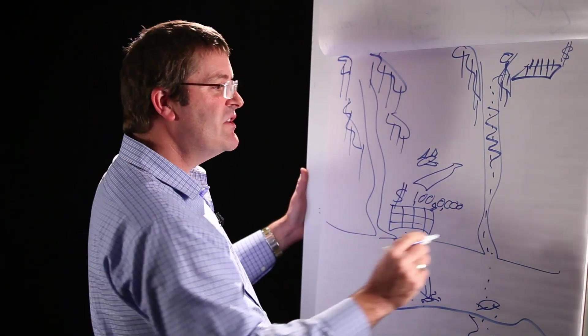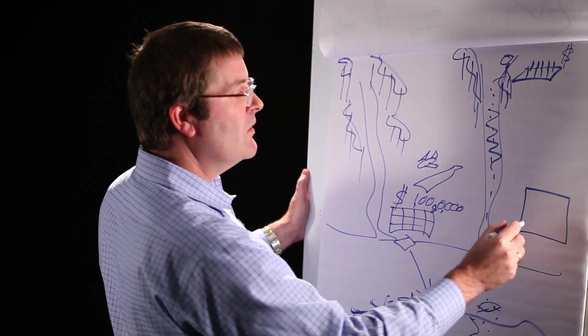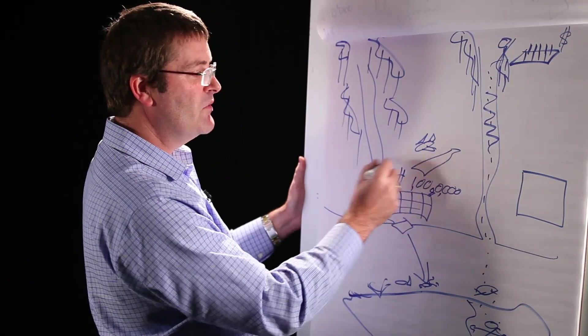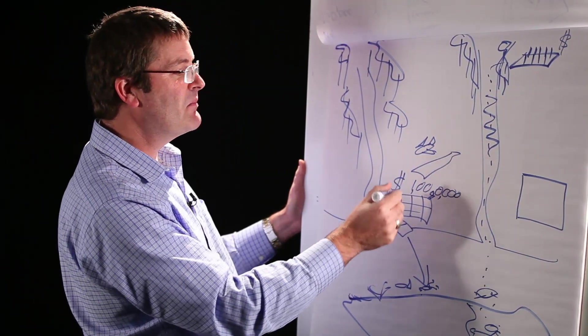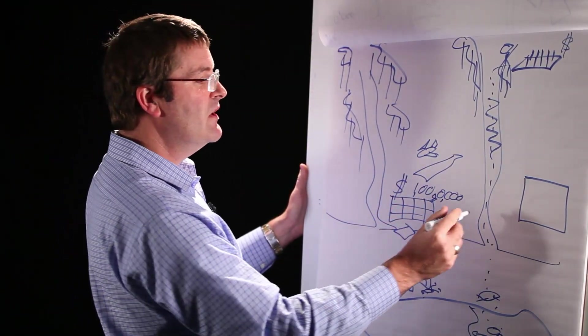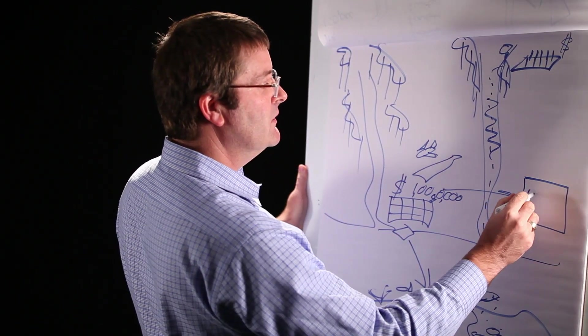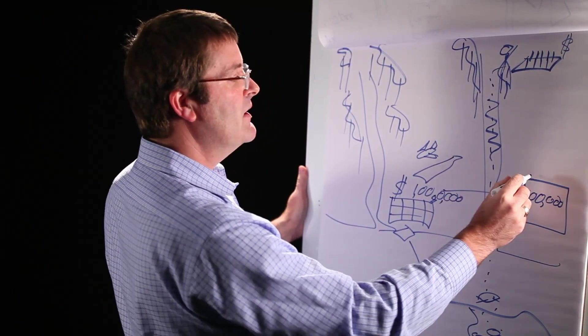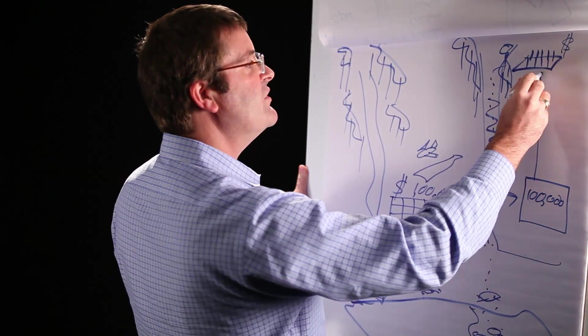This is where the government steps in. It says, okay, we will set up a system. We will charge people to visit the reef. We maybe put a tax on the incoming passengers and on the hotels. And we will collect money, and we might collect $100,000 of that money.